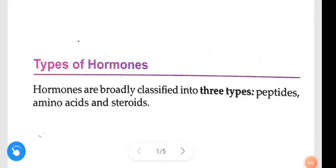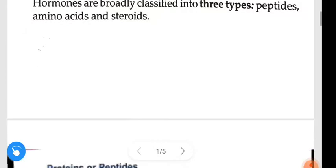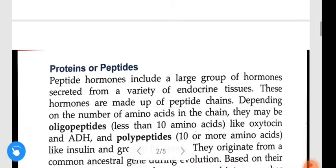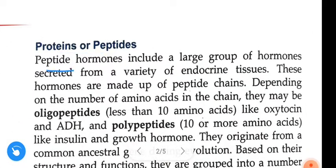Om Namashivaya. Hi friends, how are you? In this video we are going to learn about types of hormones. Hormones are broadly classified into three types: peptides, amino acids, and steroids.